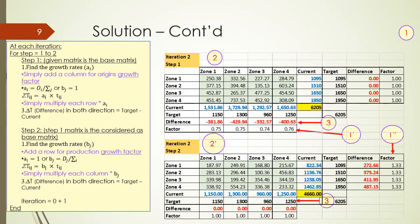In iteration two, step one, we get the factor from the destination. The factor of 0.75 is calculated by dividing the target of 1150 by the current, and the difference is the target minus the current.